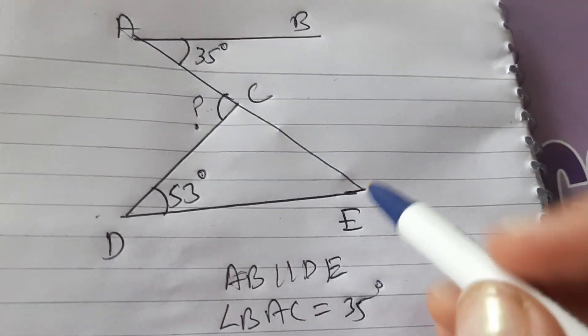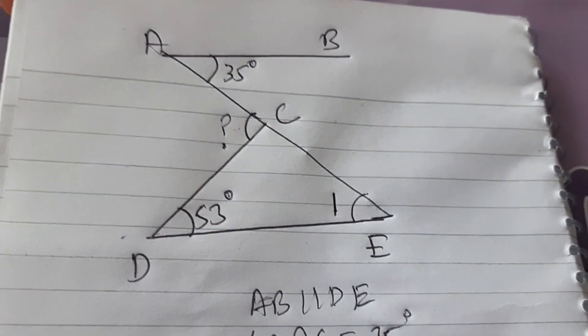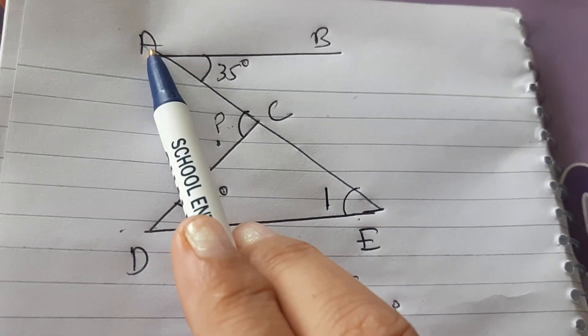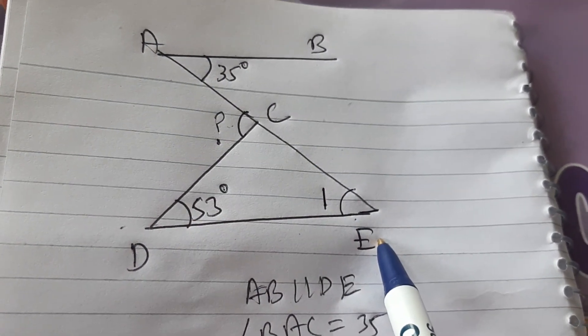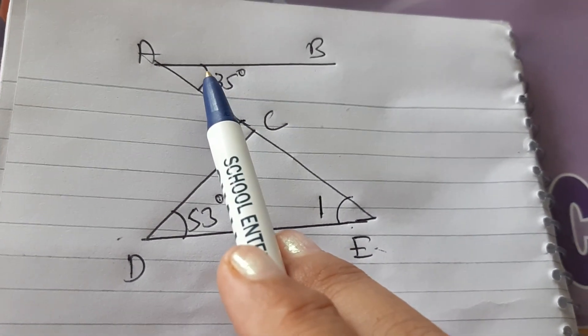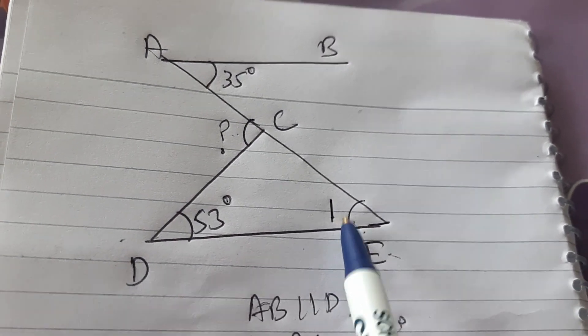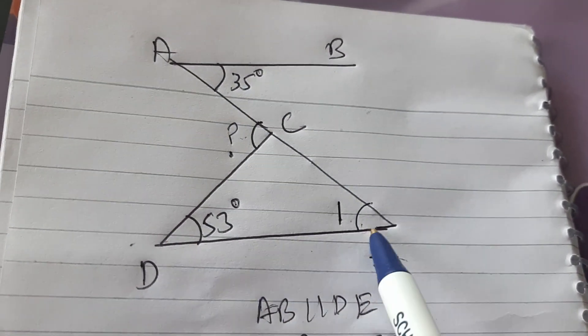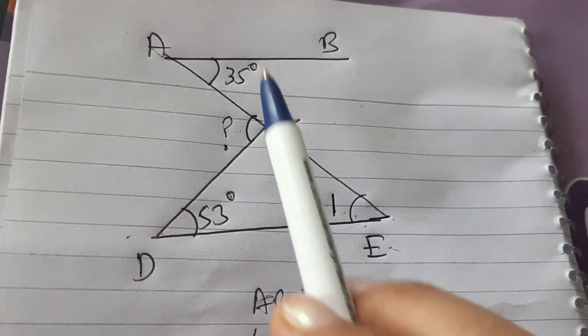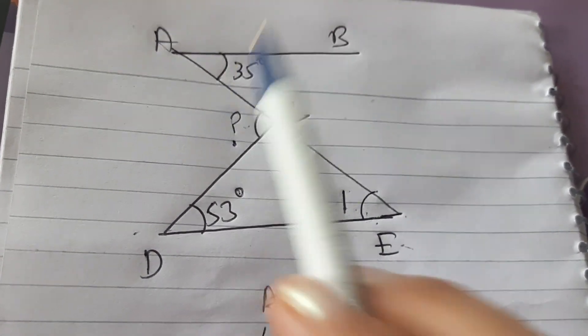Now you tell me what will be angle 1. AB is parallel to DE and AE is transversal. So angle 1 will be equal to 35 degrees because it is forming a pair of alternate interior angles. When two lines are parallel and cut by a transversal, then alternate interior angles are equal. So angle 1 will be equal to 35 degrees.